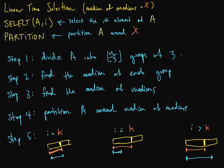We can use 3 — we used 5 in class, but we can do any number, just to see how this works out. So we divide A into floor(n/3) groups of 3. That's floored because we may have an extra couple of elements that did not get into groups of 3, like an extra element at the end.